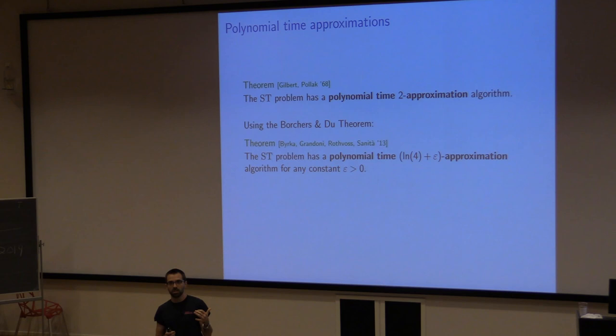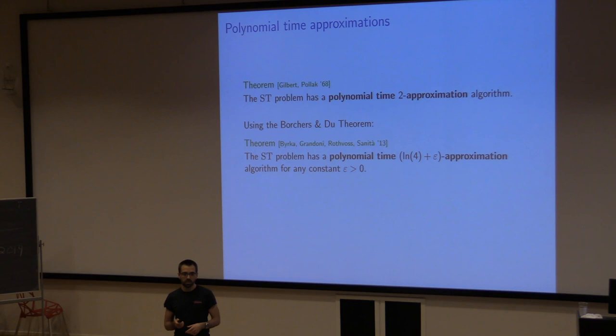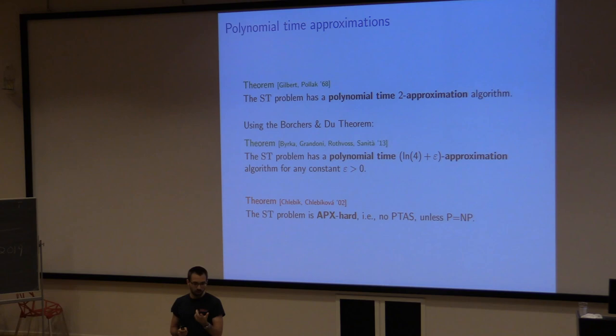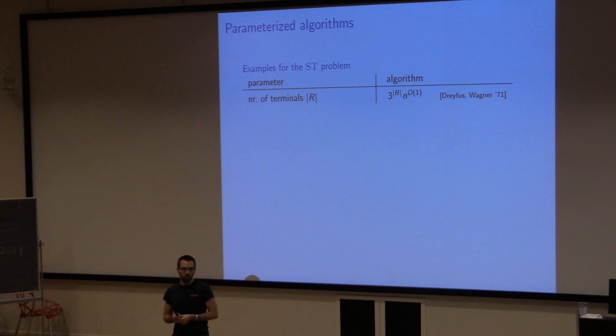The tool used to get below a factor of 2 is the Borchers-Du theorem. It turns out this tool is also quite useful to get kernels. The problem is also APX-hard, so we cannot really hope to get an approximation scheme in polynomial time.